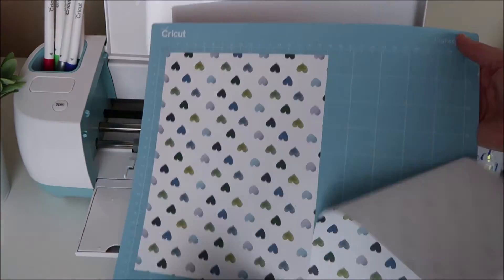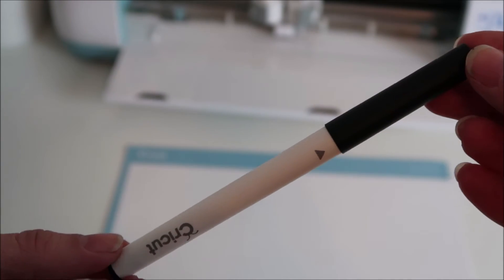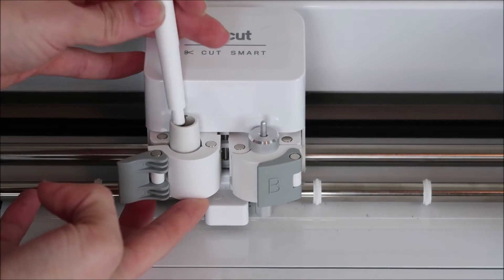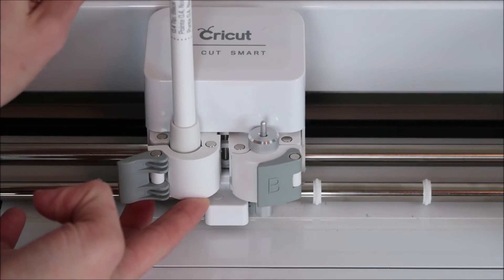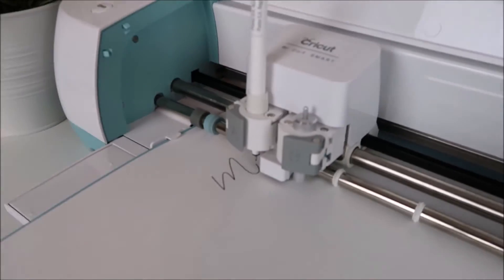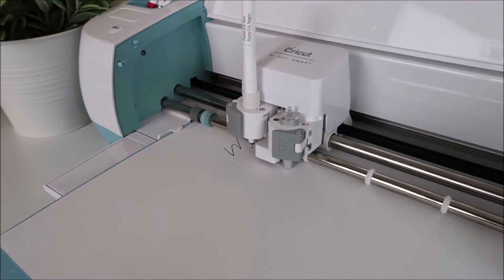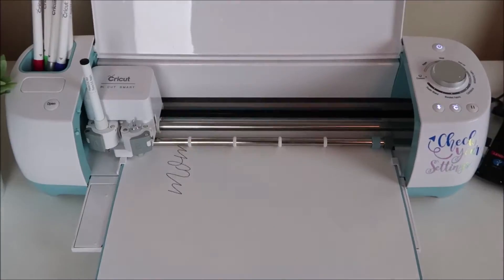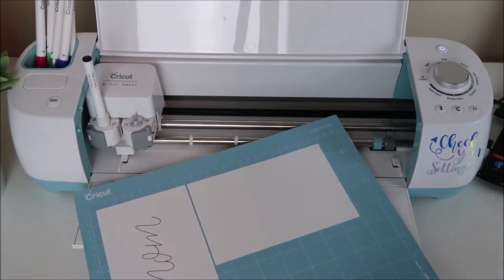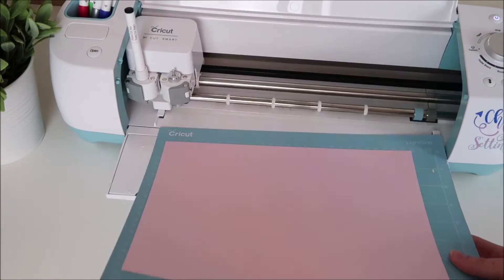Once this is done cutting, Design Space will automatically go to the next mat which is a draw and cut. I took out my scoring stylus and then I put my pen into clamp A as well. Then I place my white cardstock on my mat and have my Cricut write and cut it out.